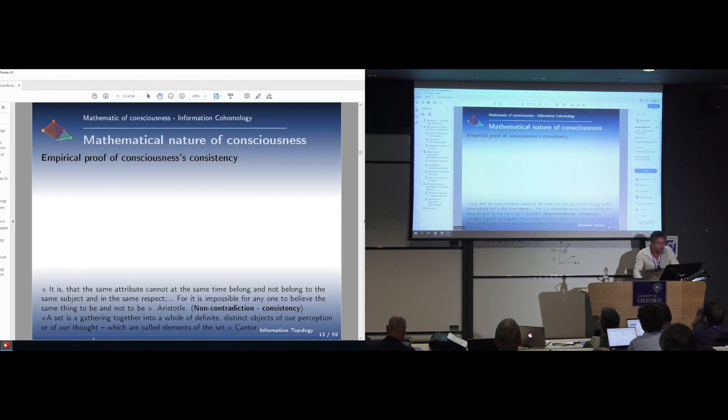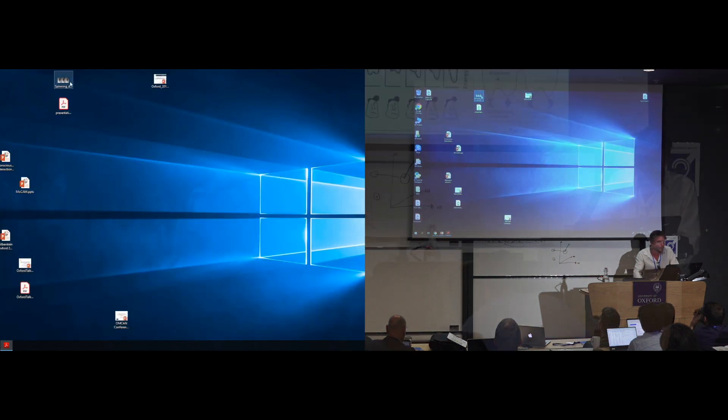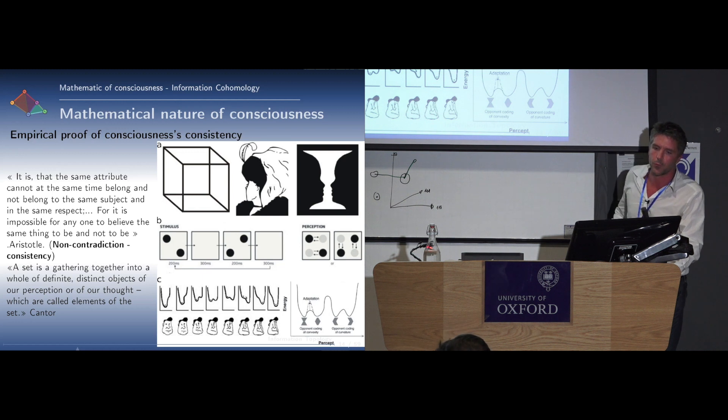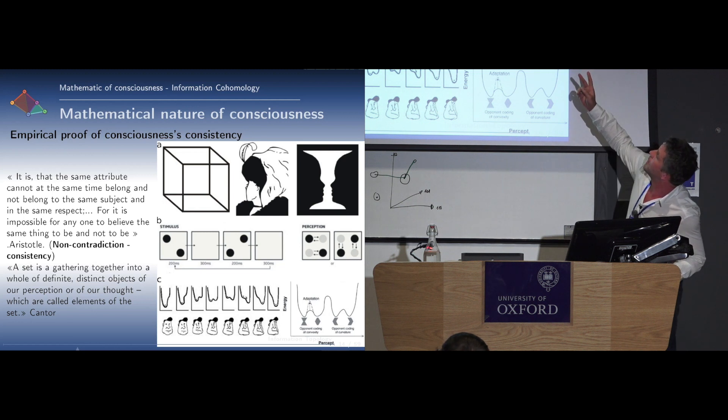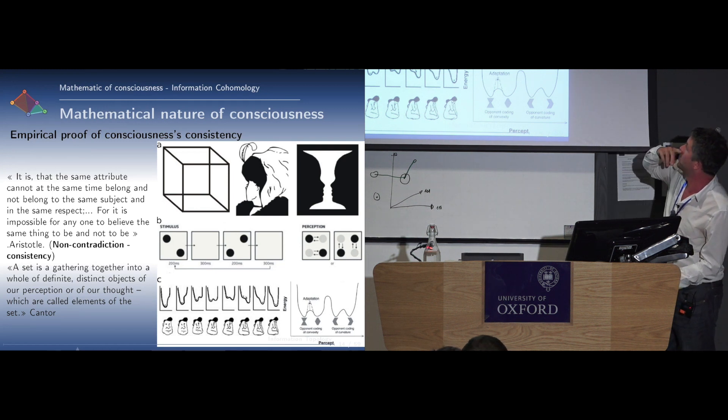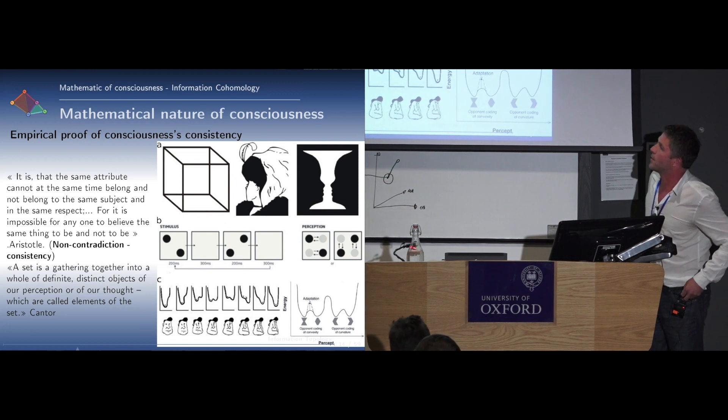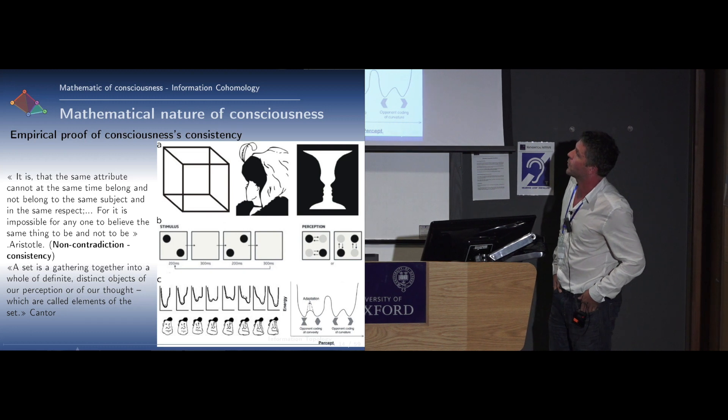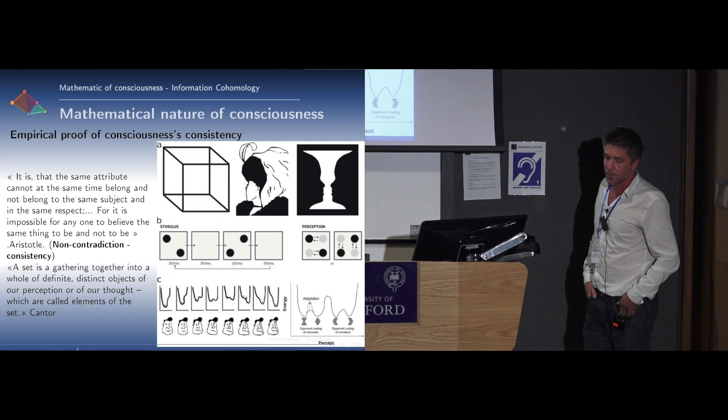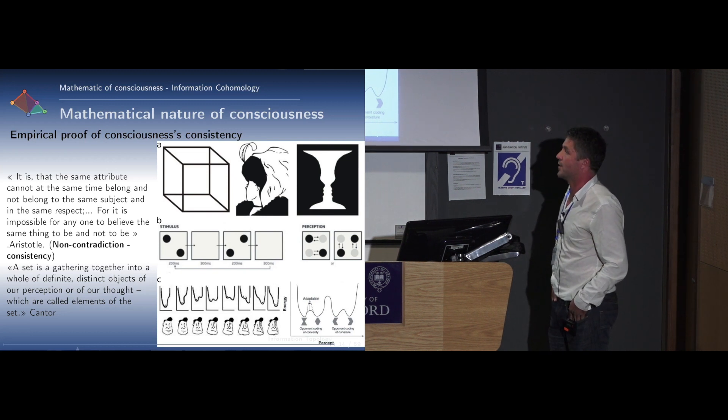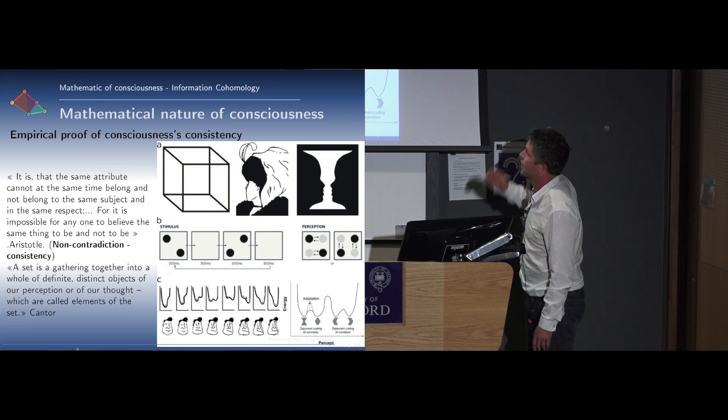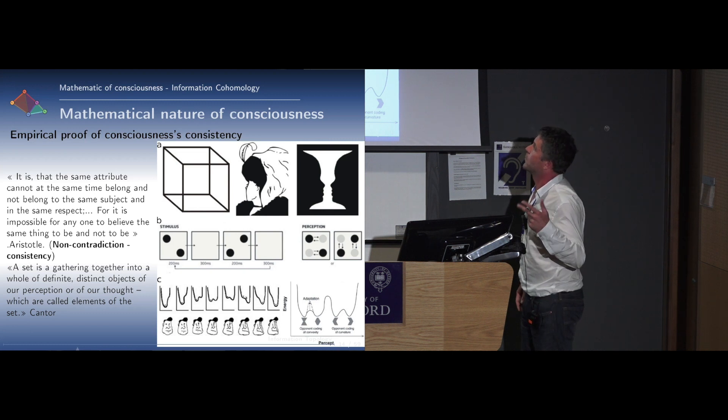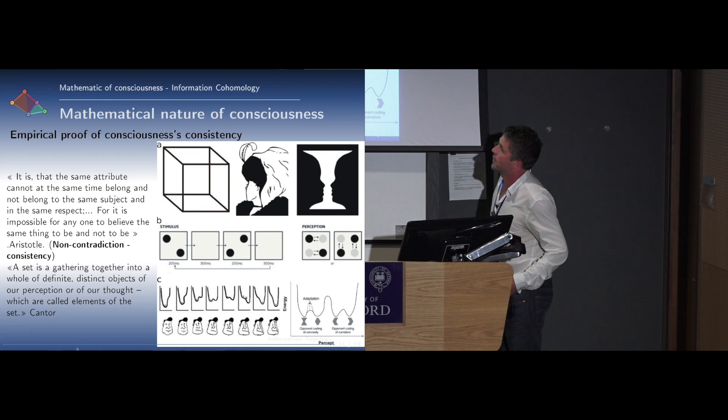Maybe I'll start with an experience. We can try to give an empirical proof of consciousness consistency. Any bistable or multistable stimuli like the Necker cube can be seen as a non-contradiction principle as stated by Aristotle. Non-contradiction is the fundamental axiom of any mathematical consistent theory. So we can hope to find some mathematics of consciousness because up to now nobody can see both cubes at the same time, in the same respect as Aristotle said.